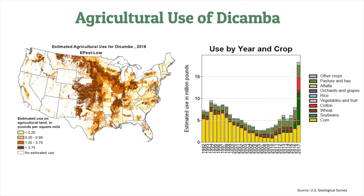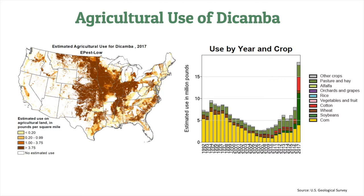This slide helps provide perspective on how the use of some herbicides has changed in recent years. To use the example of dicamba, the new herbicide formulations were released in time for the 2017 growing season, and use of the herbicide expanded across millions of acres of American farmland. These figures are from the United States Geological Survey. The map on the left shows the estimated agricultural use of dicamba in 2016, and here you can see the same map with data for 2017. Both the 2017 map and the graph of use by year and crop are actually low estimates of the agricultural use of dicamba.